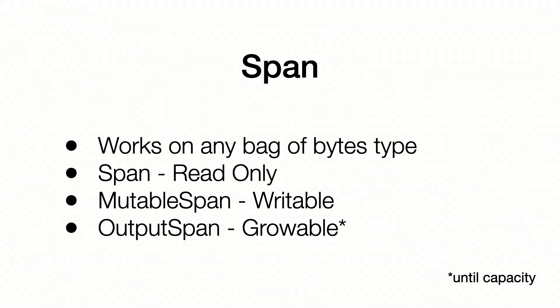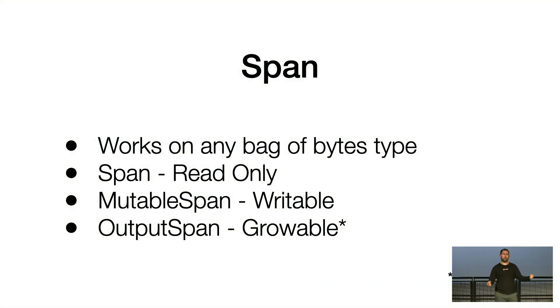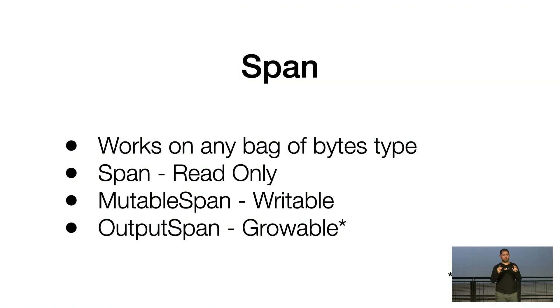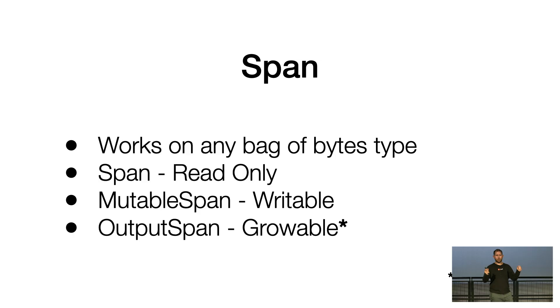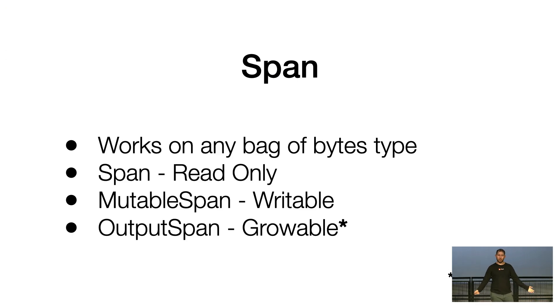Span is a really interesting type for the ecosystem for a couple of reasons. First, it works on any bag of bytes. Span is read-only, so you can't write to it. There's MutableSpan if you want to mutate something and write back. And finally there's OutputSpan — OutputSpan is kind of like a growable collection of data; you can append data to it just like an array, but it has a capacity limit you define at the start, which means you can grow it up to that capacity. If you grow beyond that, your application will crash. For the purpose of this talk, I'm not going to cover OutputSpan because I don't think it's quite what we need yet.